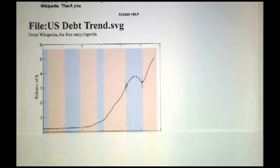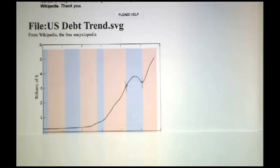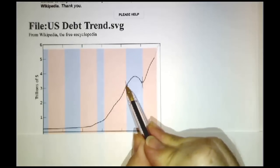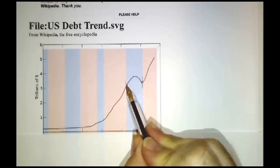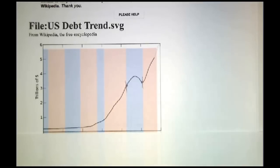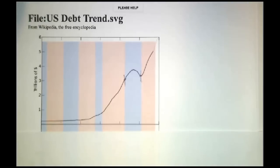All in all, our government lost money in the eight years that Bill Clinton was in office. We started off with a debt of about $3.3 trillion and we ended up with a debt of about $3.6 trillion.